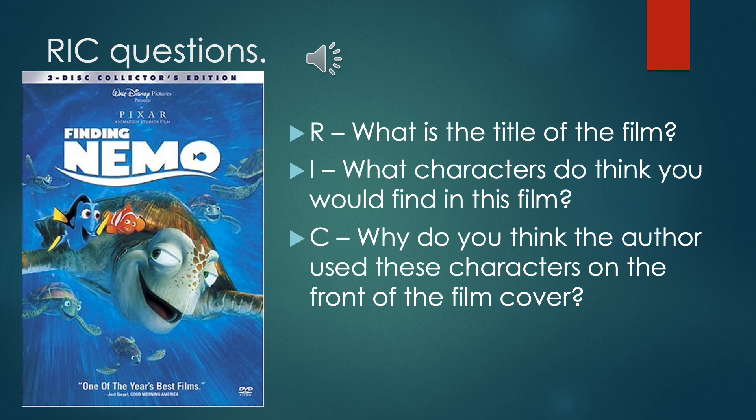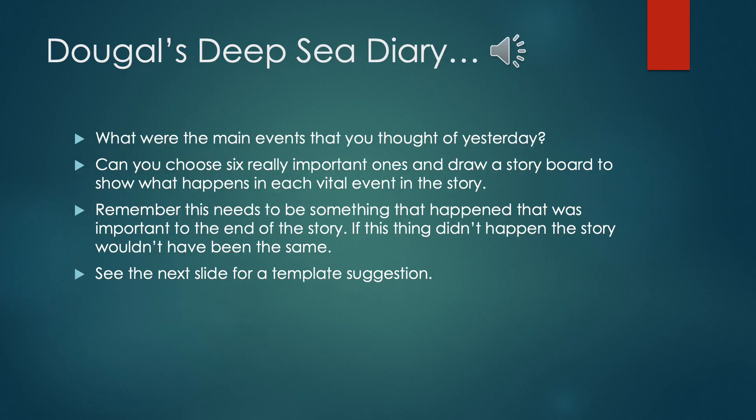The I question: what characters do you think you would find in this film? Because this is an inference question, I don't want you to just list the ones you can see in the picture — I want you to think wider than that. Think about what other characters you might see and where this film is set. The C question: why do you think the author used these characters on the front of the film cover?